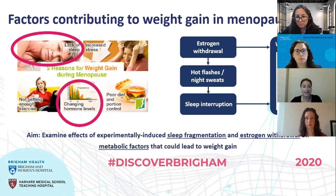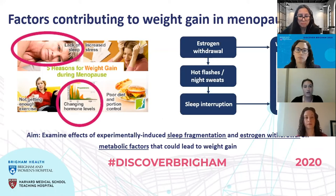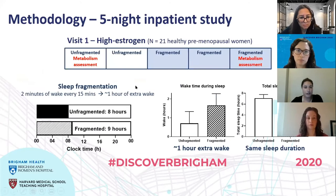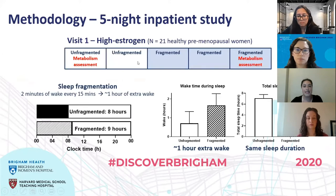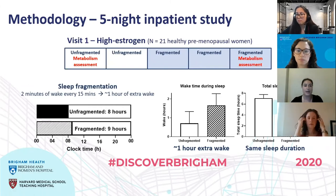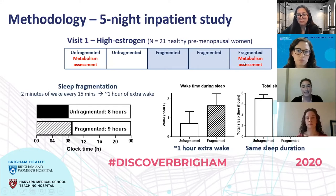We know from previous research that changes in hormone levels and changes in sleep can lead to metabolic changes that might promote weight gain. In our study, we were interested in whether experimental models of the type of sleep and hormone changes that occur during menopause could show how these affect metabolic factors contributing to weight gain. The study had two study visits — I'll start by walking you through study visit one. We studied 21 healthy premenopausal women in a five-night study: the first two nights were normal uninterrupted sleep, followed by three nights of sleep fragmentation.